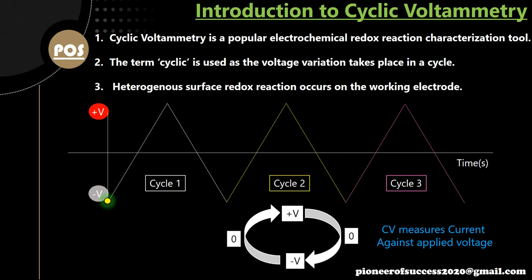Let me do a recap of previous videos. Cyclic voltammetry is a standard characterization tool widely used to characterize any redox couple reaction. The reaction happens in a heterogeneous fashion on a working electrode surface, at the interface of the solid working electrode and the liquid electrolyte. We call it cyclic because the voltage rotates cyclically — from minus V to zero, then to V, back to zero, and again to minus V — as shown in this animation for cycles one, two, and three.